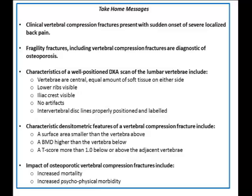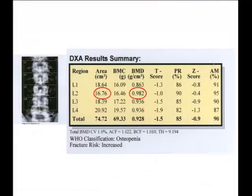The take-home messages for this case: clinical vertebral compression fractures present with sudden onset of severe localized back pain. Fragility fractures including vertebral compression fractures are diagnostic of osteoporosis. A well-positioned DEXA scan has central vertebrae, visible ribs and iliac crest, no artifacts, and properly positioned intervertebral disc lines. Densitometric features of vertebral compression fractures include a smaller surface area than the vertebra above, a higher BMD than the vertebra below, and a T-score more than one standard deviation out of line with adjacent vertebrae. The impact of osteoporotic vertebral compression fractures — including silent morphometric ones — includes increased mortality and increased psychophysical morbidity.